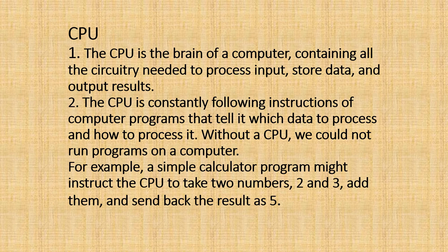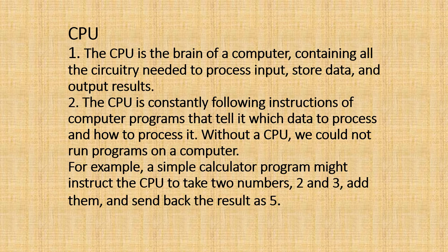Now let us study about the CPU. Just like our own brain controls every part of our body, the computer also has a brain which controls every part of the computer. The CPU is the main brain of the computer, containing all the circuits needed to process input, store data, and output results. The CPU constantly follows the instructions of computer programs that tell it which data to process and how to process it, just like the brain in our body tells us what to do. Without a CPU, we cannot run programs on a computer.